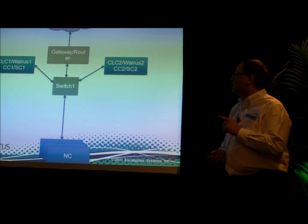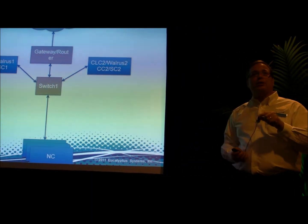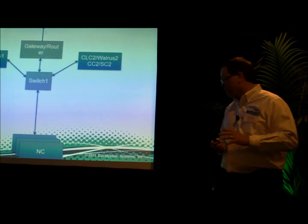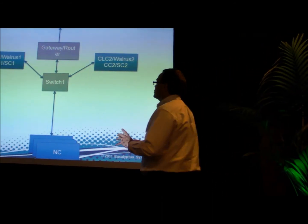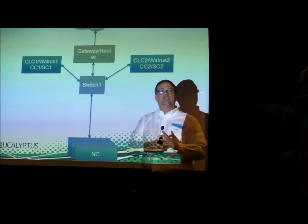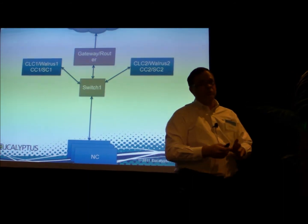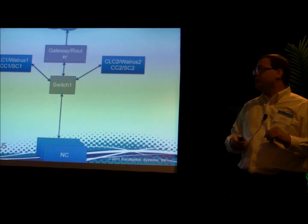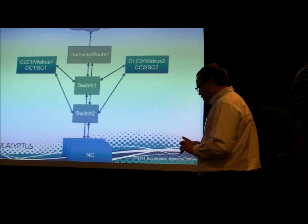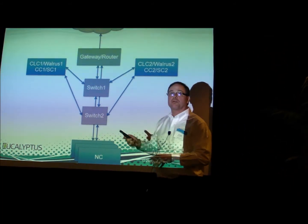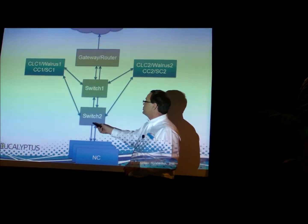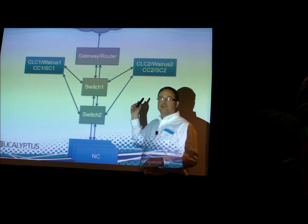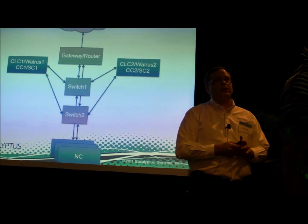Now you'll notice that there is one thing I've shown here that doesn't make this highly available — it's not really part of the Eucalyptus software but part of the infrastructure — and that's a switch. In each of these things, I've had a single switch that is a single point of failure. So we've made sure that Eucalyptus can work with multiple switches, such that even if a switch goes down, the other switch can route the traffic appropriately.